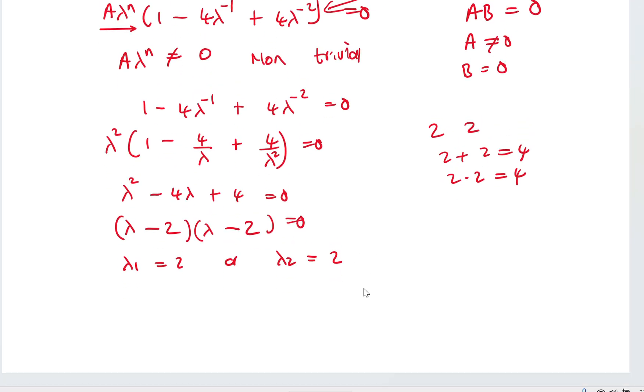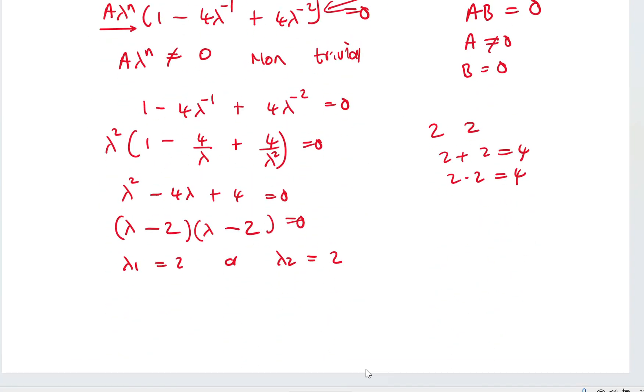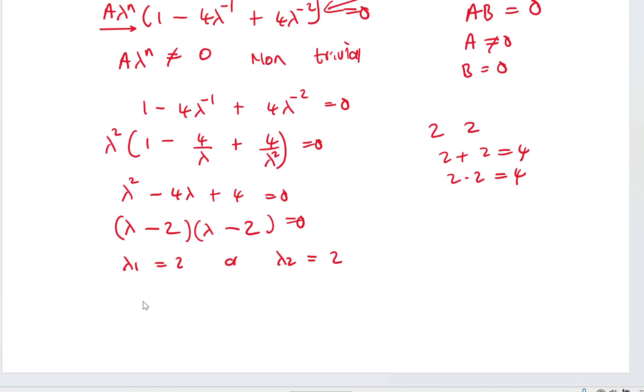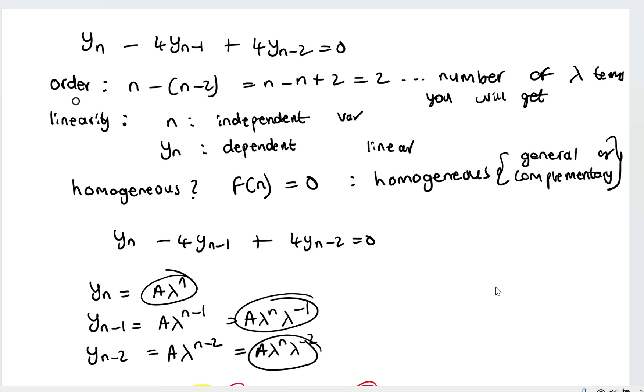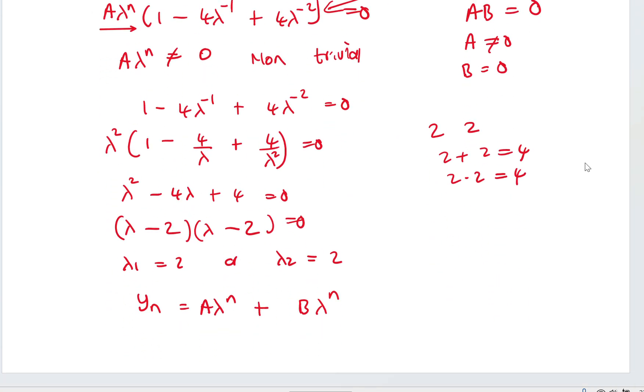So we said our general solution or our trial solution took the form A lambda to the power of n. Since I've got two values of lambda, I'm going to extend this so that there are two terms. Remember, we said our order is 2. So if our order is 2, we must have two terms in the general solution.